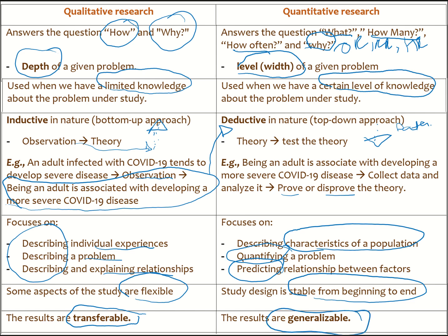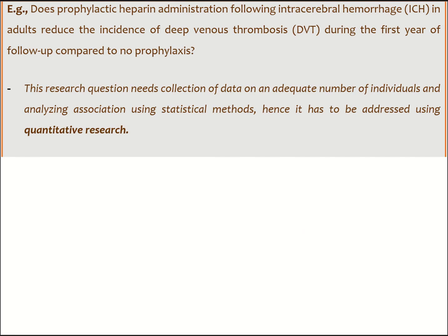These are the major differences between qualitative and quantitative research. For one more example: if a researcher asks, 'Does prophylactic heparin administration following intracerebral hemorrhage in adults reduce the incidence of DVT during the first year of follow-up compared to no prophylaxis?' — what we're interested in is the risk of developing DVT among adults with ICH. This needs numbers and measuring the degree of relationship using numerical values, so this is clearly a quantitative research question that has to be addressed using quantitative research.